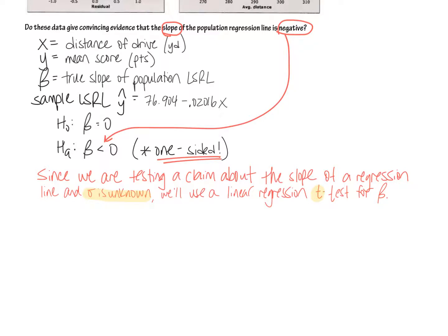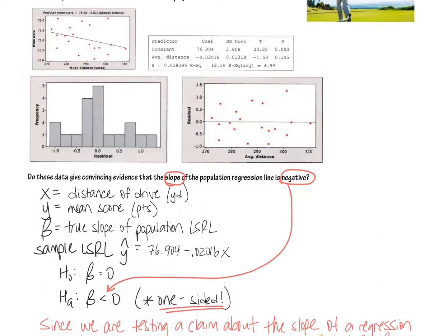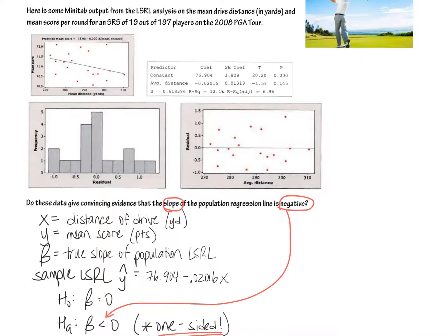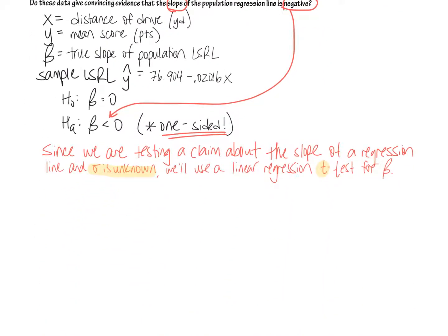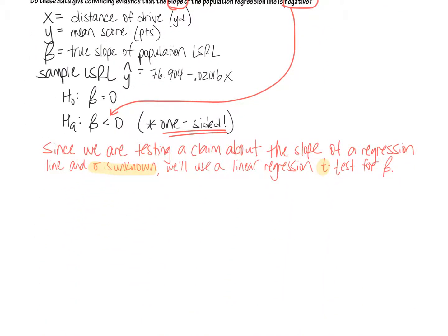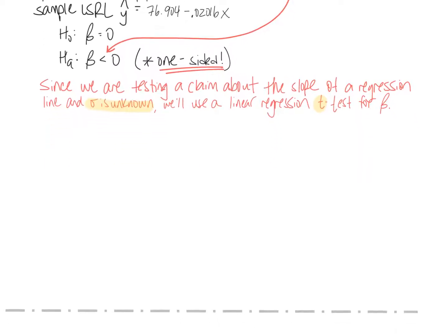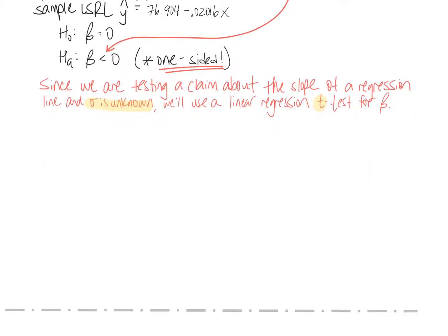We only have an SRS, so that's why we're using a t-test. What are we testing for? Beta. And you know what comes next. Now we've got to go through our conditions. Remember the acronym LINER. I'm going to write those out. L stands for linear, I for independent, N for normal, E for equal variance, R for random. LINER. That's our acronym.